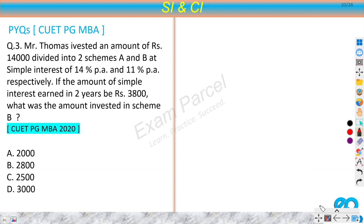Question number three is from the 2020 paper. Mr. Thomas invested rupees 14,000 divided into two schemes A and B at simple interest of 14% and 11% respectively. If the total simple interest earned in two years is rupees 3800, what is the amount invested in scheme B? Here we will use the important approach of finding SI as a percentage of principal.